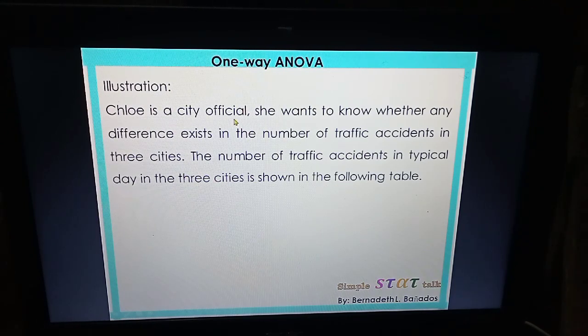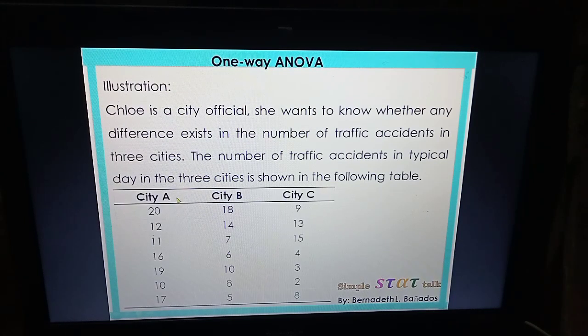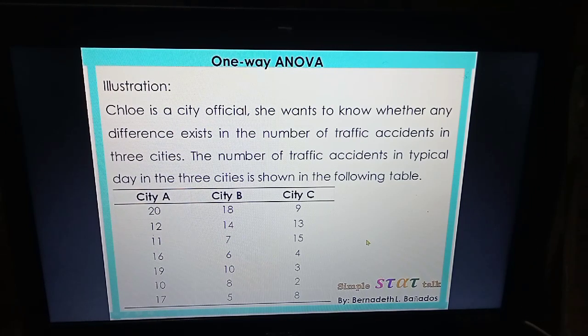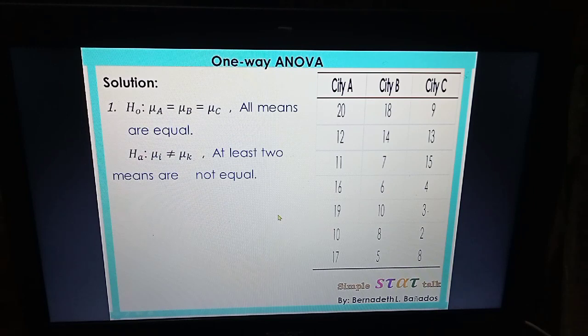To illustrate how we are going to compute those values, let us use this problem. Chloe is a city official. She wants to know whether any difference exists in the number of traffic accidents in three cities. The number of traffic accidents in a typical day in the three cities is shown in the following table. There are three columns for City A, City B, and City C. These are the number of traffic accidents in each city. We are now going to start performing one-way ANOVA.